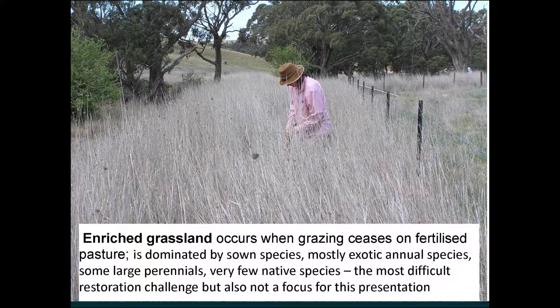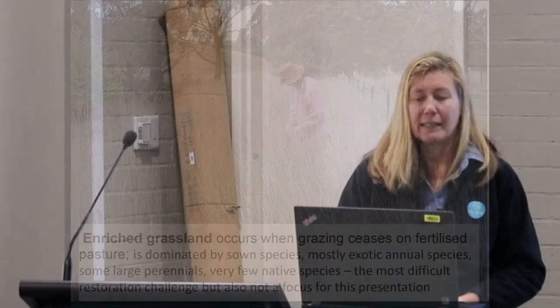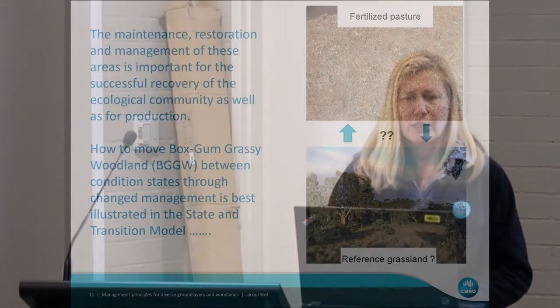The enriched grasslands are when you maybe fence off a highly fertile area — say you're going to plant trees in it — and basically you get a lot of large perennials like Phalaris just dominating. It's one of the most difficult in terms of restoring, but it's also not really a focus for this presentation.